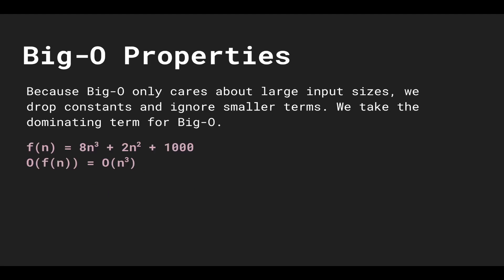Because we only care about large input sizes, we drop constants and ignore smaller terms. For example, from an expression like 8n³ + 2n² + 1000, we drop the 1000 constant, ignore the smaller 2n² term, and also drop the scalar 8, leaving us with n³. The reason this matters is that when n approaches a million or infinity, the 1000 barely contributes and we only want the most dominating term. So we say Big O of this function is n³.